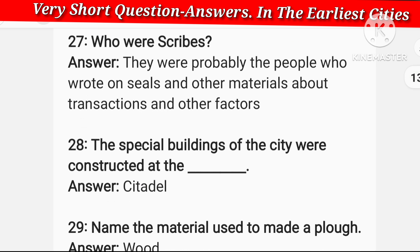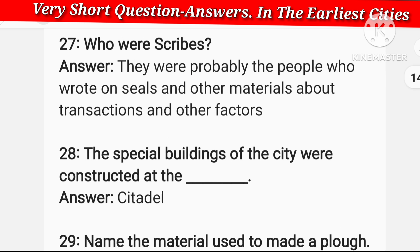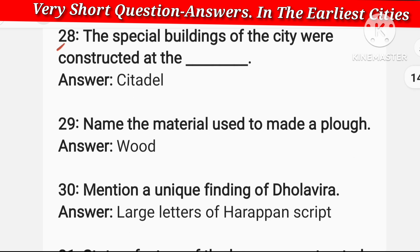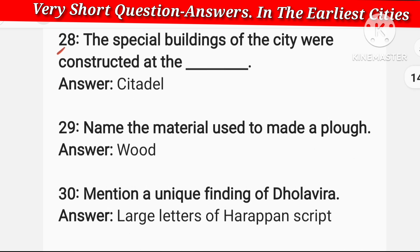Who were scribes? They were probably the people who wrote on seals and other metals about transactions and other factors — meaning all the trade dealings and other reasons were written by them. They were called scribes.